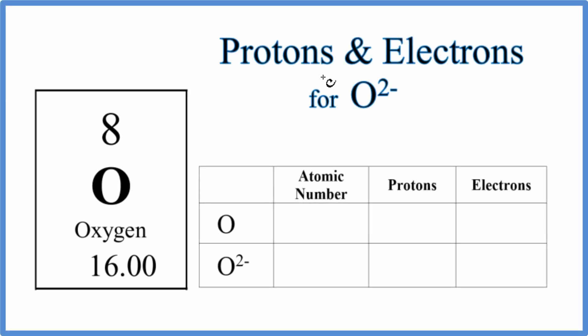In this video, we'll find the number of protons and electrons for O2 minus. This is the oxide anion. It's an ion of oxygen.